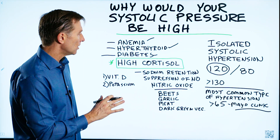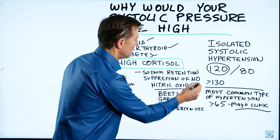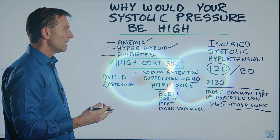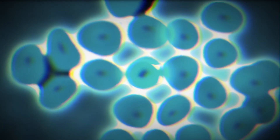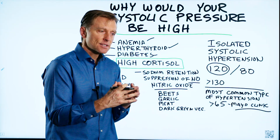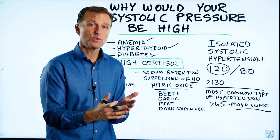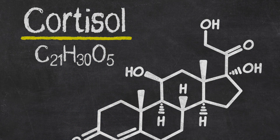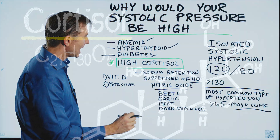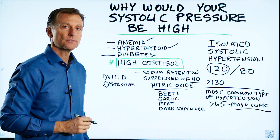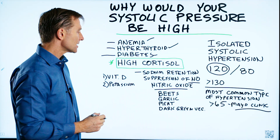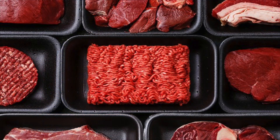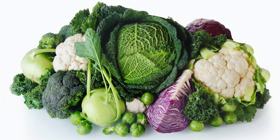High cortisol will also cause suppression of nitric oxide. Nitric oxide is a natural compound our cells produce as a vasodilator to relax blood vessels and reduce blood pressure — and cortisol suppresses that. You can also consume foods that are high in nitric oxide, like beets, garlic, meat, and dark leafy green vegetables.